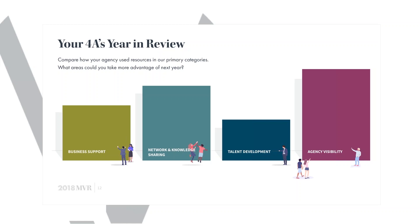The 4As engagement objectives — what they had going into development of the report — organized engagement into four categories: business support, networking and knowledge sharing, talent development, and agency visibility. For each engagement objective they had multiple categories within it. We'll drill into the talent development part specifically as we look at the report.